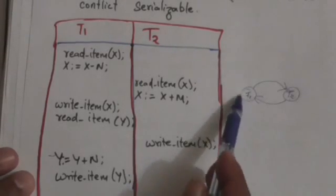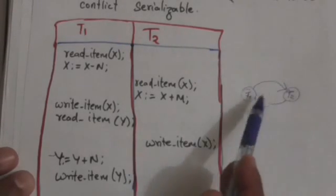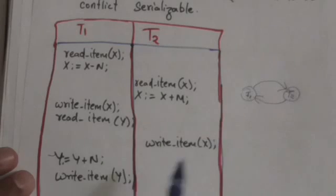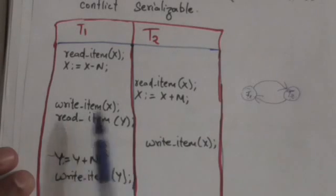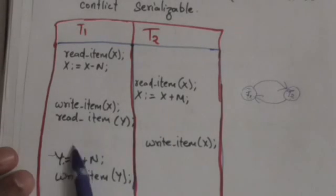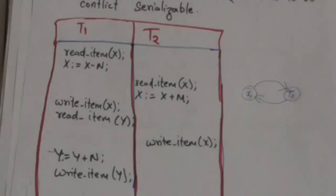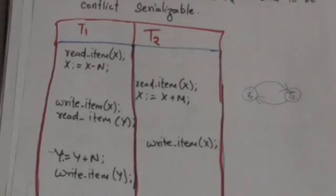Now see in this precedence graph there is a cycle. Therefore this schedule is not a conflict serializable schedule.